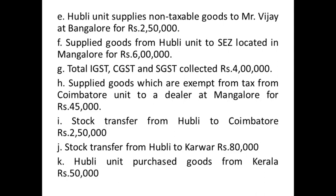Transaction 5: Hubli unit supplies non-taxable goods to Mr. Vijay at Bangalore. Hubli and Bangalore are both in Karnataka, so it is intrastate. However, since the goods are non-taxable, we should not take it under taxable turnover. It will be included in aggregate turnover but not in taxable turnover.